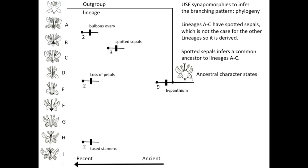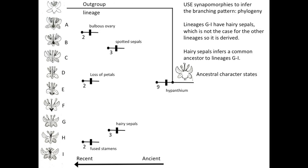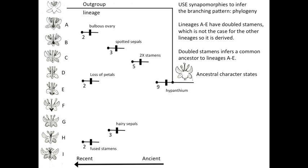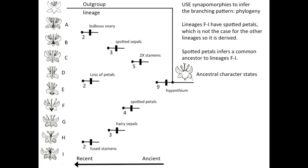Lineages A, B, and C all have spotted sepals, inferring a common ancestor for these three lineages. Lineages G, H, and I all have hairy sepals, inferring a common ancestor for these three lineages. Five lineages — A, B, C, D, and E — all have double the number of stamens, inferring a more ancient common ancestor. Four lineages — F, G, H, and I — have spotted petals, inferring a somewhat ancient common ancestor for those four lineages.